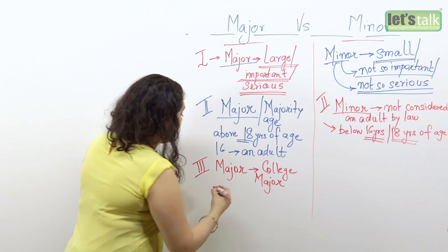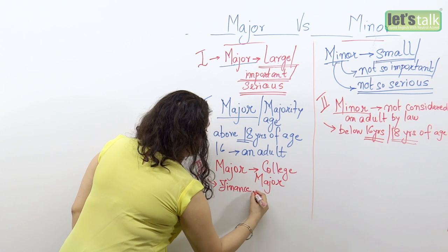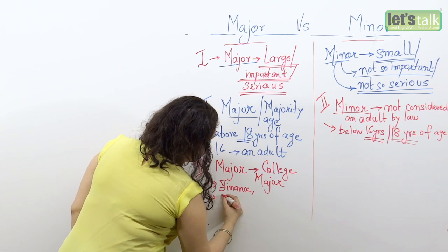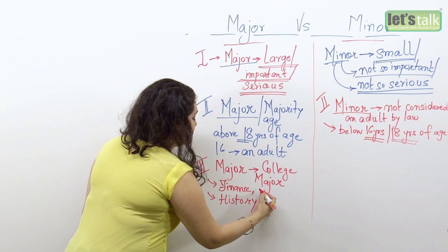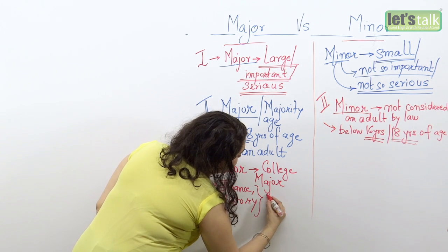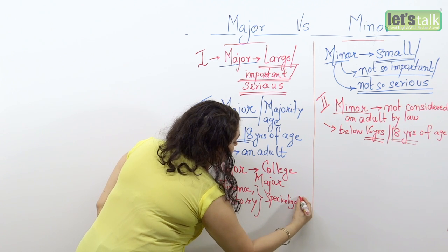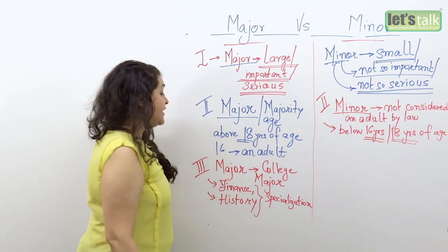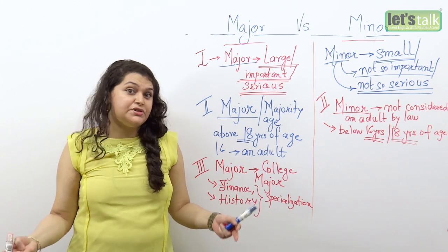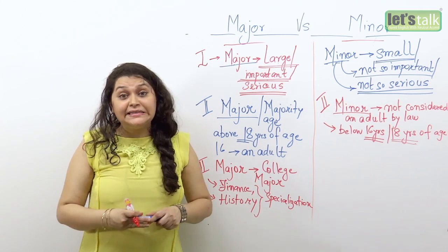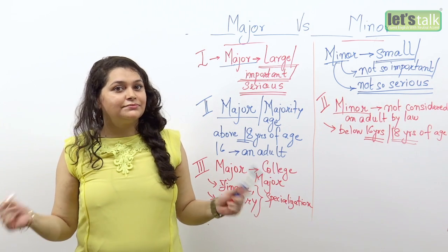Some people are finance majors, some people are history majors — which means finance or history is their specialization. So if I take up a course which gives me an intensive study of history for say three or four years, I could comfortably say that my college major was history.